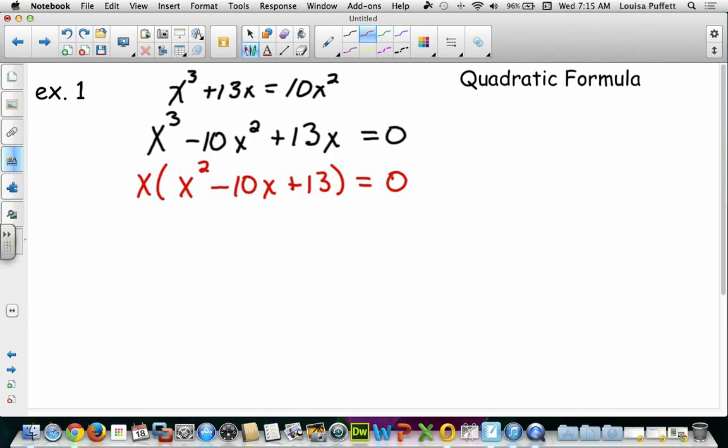What I can do is take the quadratic and set it equal to zero, and take that x that's outside of the quadratic and set it equal to zero. So x equals zero. But I also have x squared minus 10x plus 13 equals zero. And as we talked about, we can't factor that. So since we can't factor it, the thing that we want to do is use the quadratic formula.